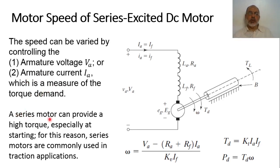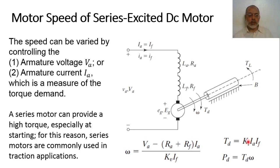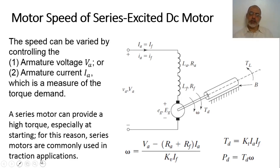A series motor can provide a high torque, especially at starting. At startup, the field current equals the armature current and both are large values, so we are multiplying a large value by a large value, giving a large torque. For this reason, series motors are commonly used in traction applications, such as lifts.